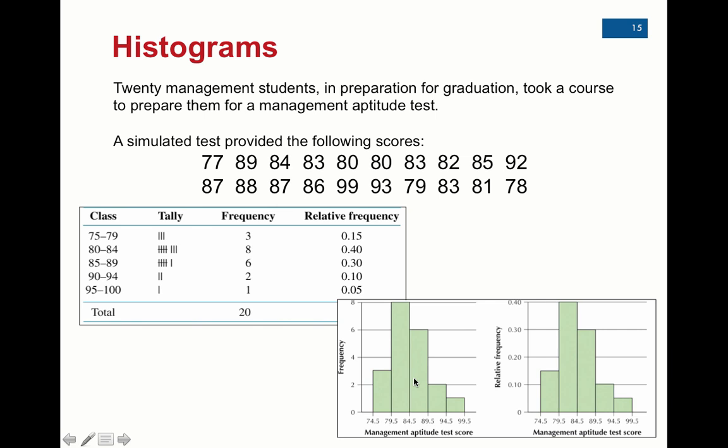Remember, we don't want to list each individual score and put a bar for each individual score. We would have 20 different bars, or about 20 different bars, and it wouldn't be very informative.